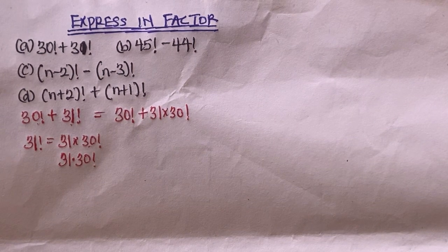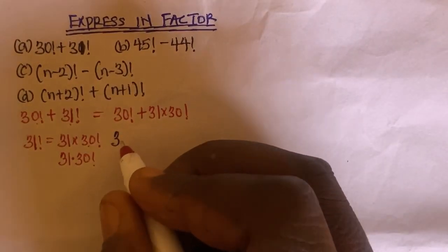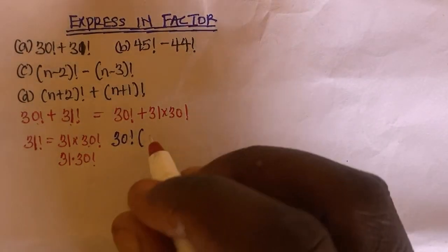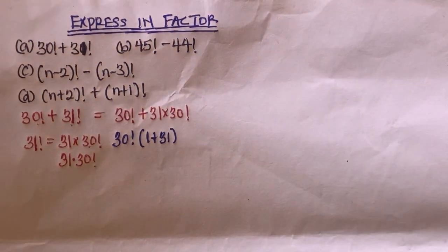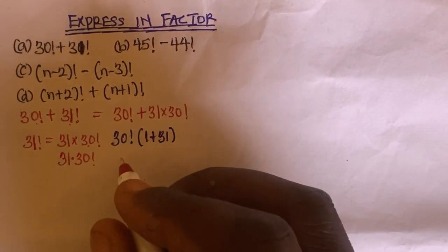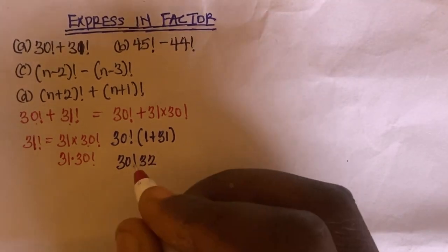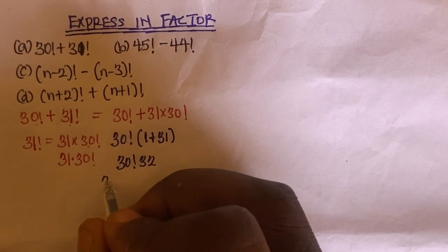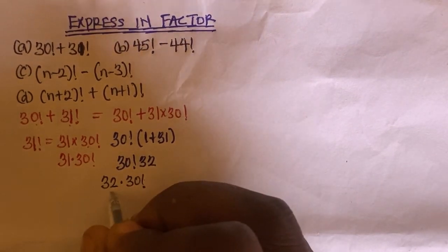The common factor we can factorize out is 30 factorial. So factorizing 30 factorial, we get 30 factorial times the quantity (1 plus 31). Now 1 plus 31 is 32. But we cannot leave the answer as 30 factorial times 32, because 32 is greater than 30, so we rewrite it as 32 times 30 factorial.